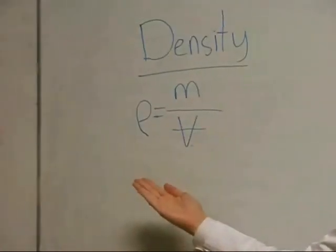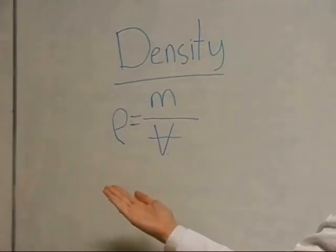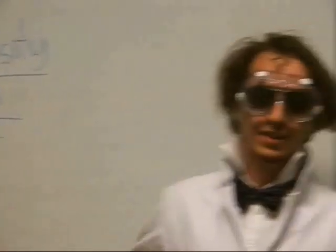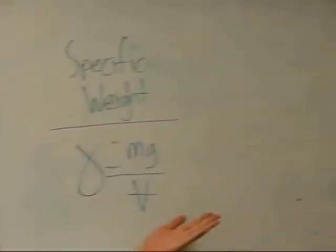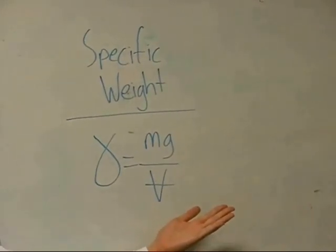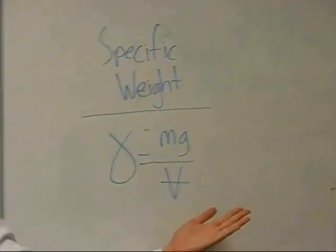That is, density measures the fluid's mass per unit volume. Don't get mass confused with weight — they measure different things. In fact, there's a separate property known as specific weight, which measures the fluid's weight per unit volume.